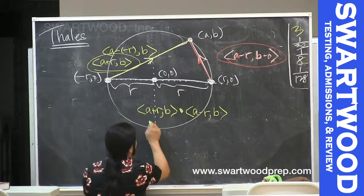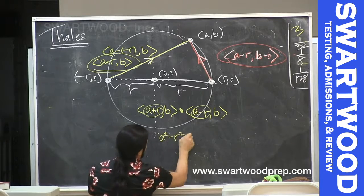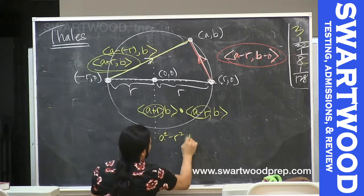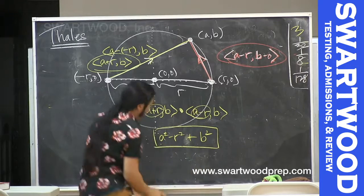This guy is going to be, I guess this term times that term, this can be A squared minus R squared, plus this term times that term which is B squared.